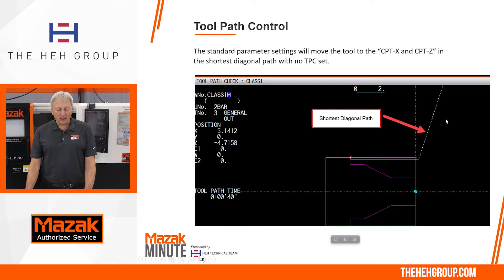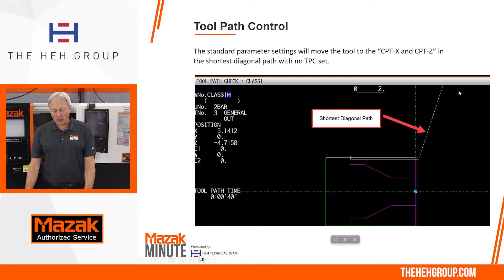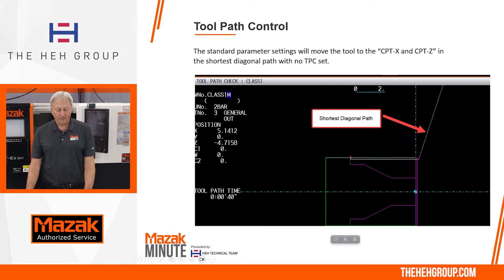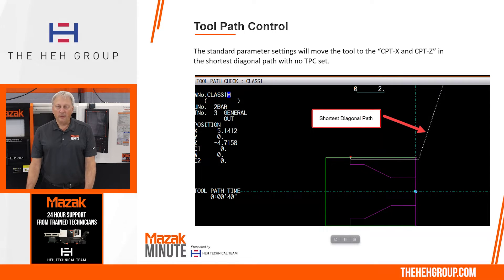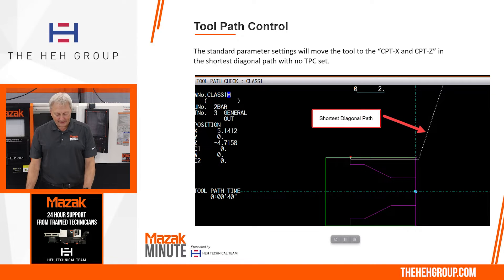Here you're going to see a standard toolpath. What the tool is doing is it's coming from wherever the index position was and coming in the shortest path down to the contact point. If you wanted to have it move first further in the z-axis and then come down, that's where you would set the TPC.